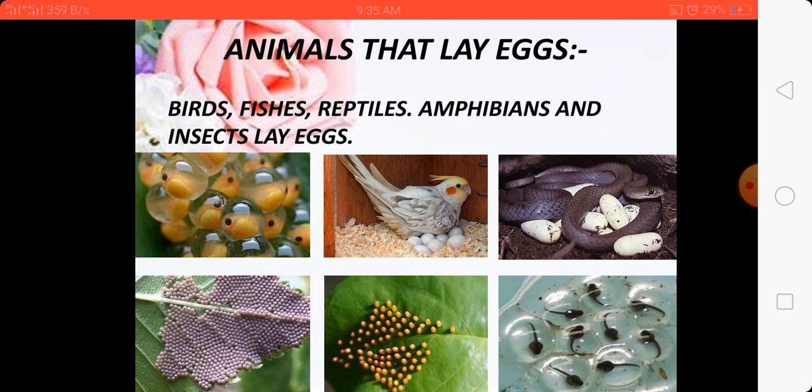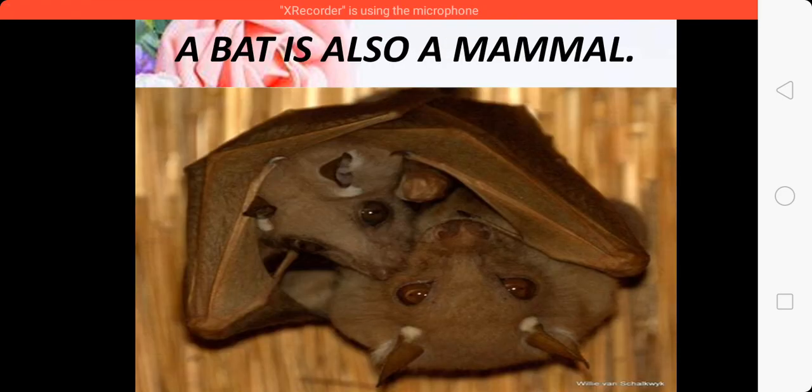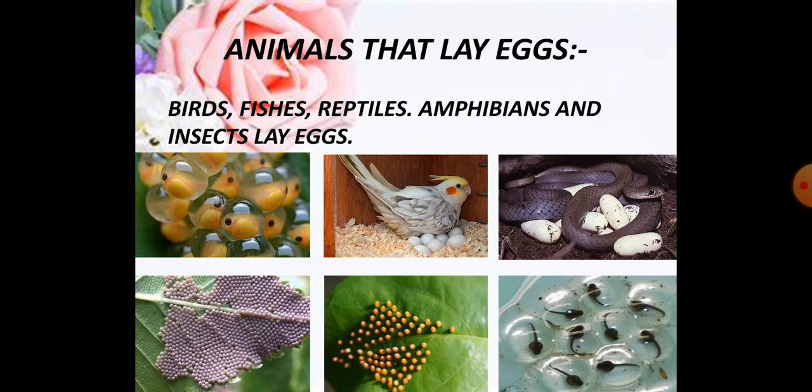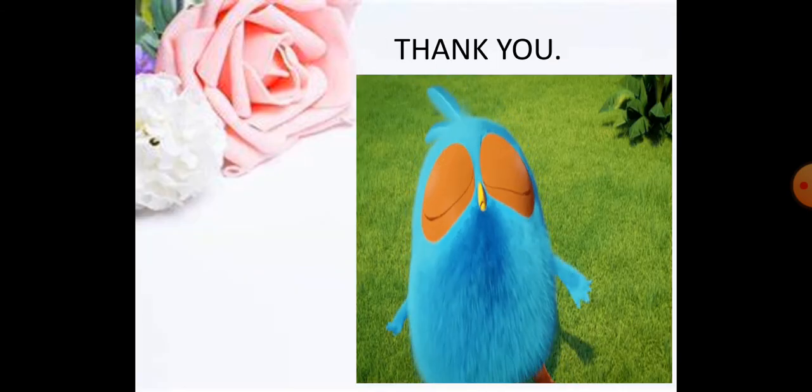So animals reproduce in two types — by laying eggs and by giving birth to babies. Tomorrow we will talk about birds and their eggs, and also about the different types of eggs like those of fish, reptiles, and amphibians. Read pages 32, 33, and 34. Okay, till then bye-bye and take care.